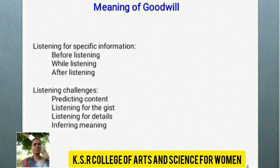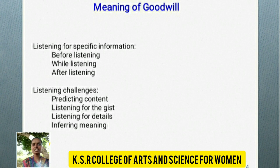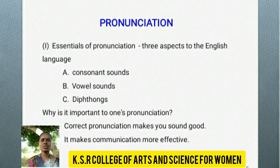Meaning of goodwill. Listening for specific information — there are three types: before listening, while listening, and after listening. Listening challenges include predicting content, listening for the gist, and listening for detail. These are the three aspects of language.